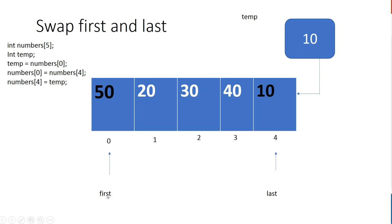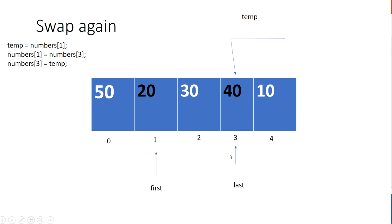We increment 'first' by one and decrement 'last' by one, moving our arrows accordingly, and we do the same swapping as before. This time we store our temp variable as 20.